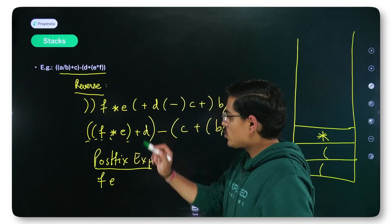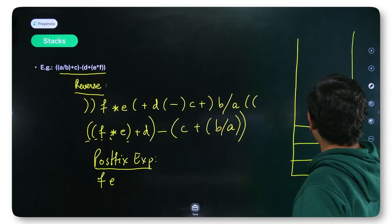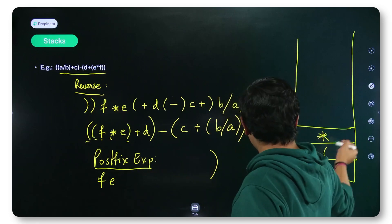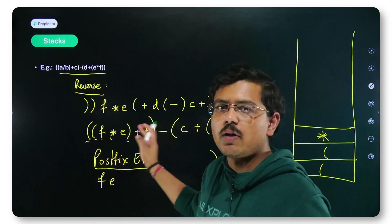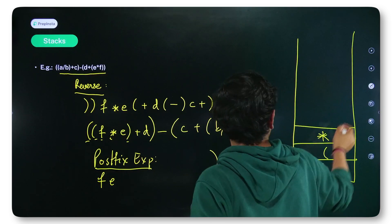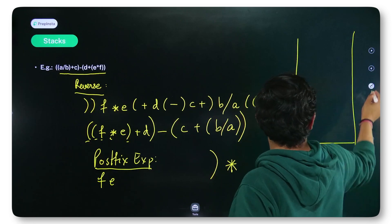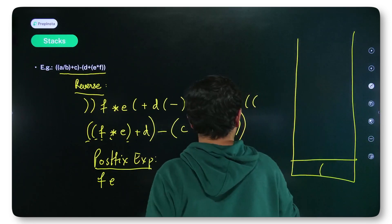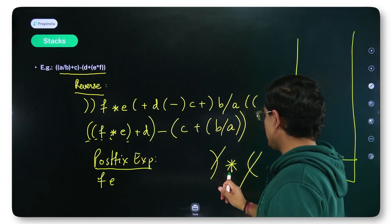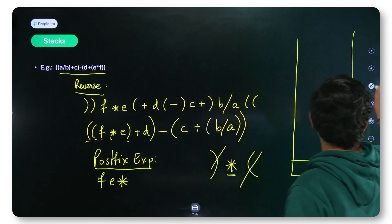Then comes a closing parenthesis. Whenever you encounter a closing parenthesis, pop whatever lies in the stack and print it until you encounter an opening bracket. So I pop the multiplication operator out, then I also pop the opening parenthesis out, and as soon as I encounter the opening parenthesis, I stop. I discard both of them and print this multiplication operator in the postfix expression.